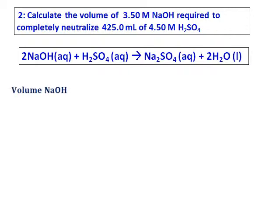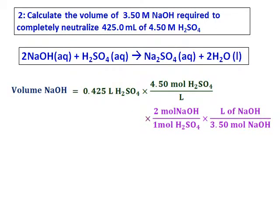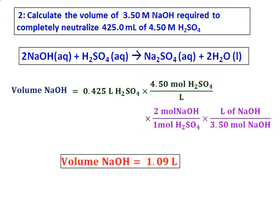Now, volume of NaOH can be calculated as shown over there. The first step is I am getting the moles of sulfuric acid. Then the moles of sulfuric acid is converted into moles of sodium hydroxide using the equation. 1 mole of sulfuric acid takes in 2 moles of sodium hydroxide. Then that has been converted into liters by dividing it by the molarity. And hence, volume of sodium hydroxide comes as 1.09 liters.